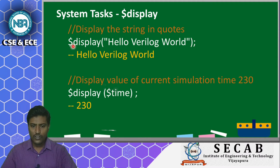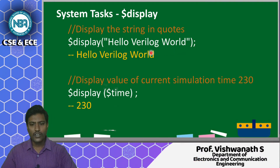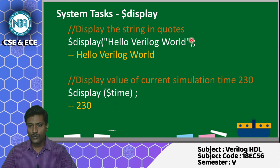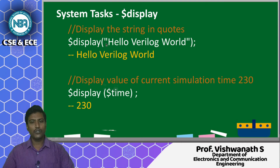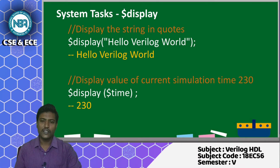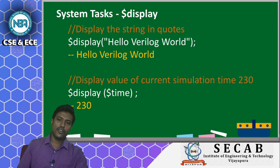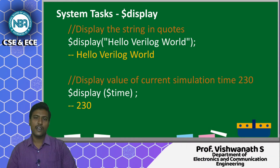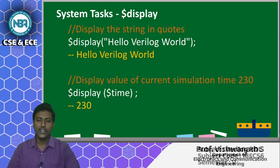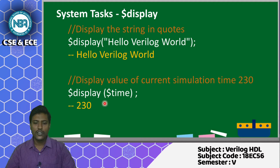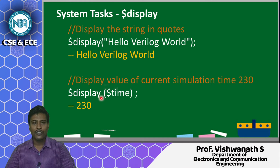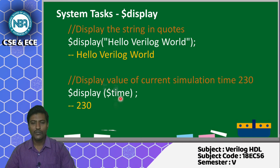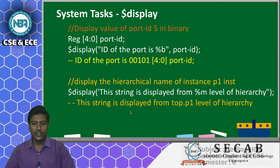Here are some examples: $display("hello Verilog world") — to display any string, place the sentence in double quotes. If you want to display the simulation time at which a value occurs for a variable, write $display($time), which displays the current simulation time.